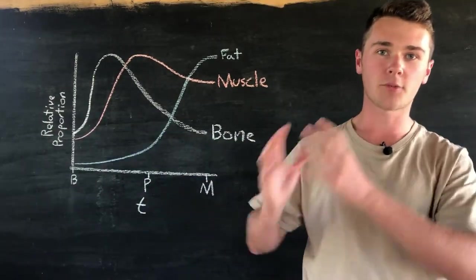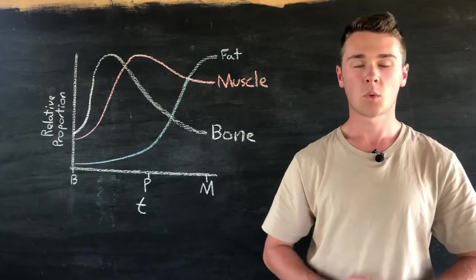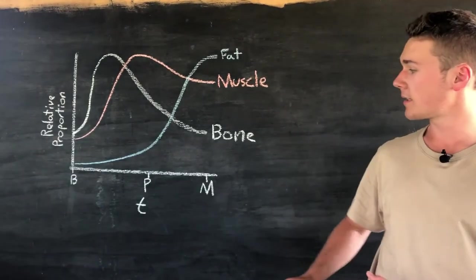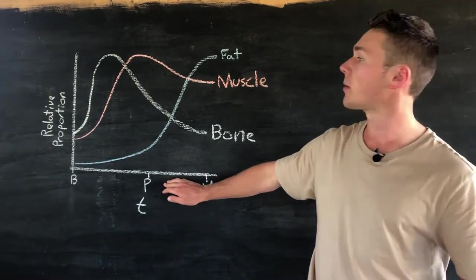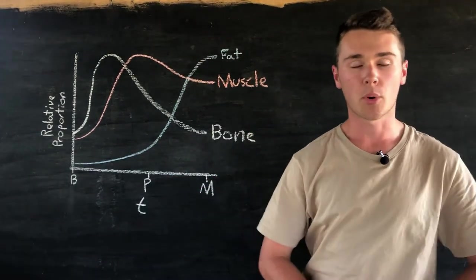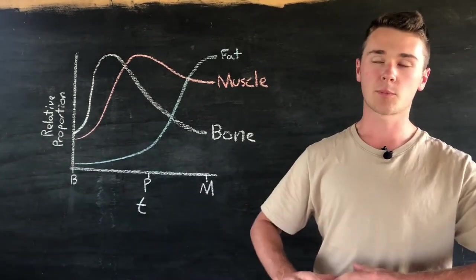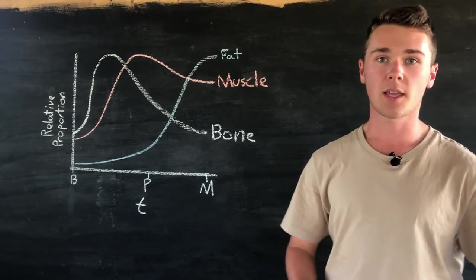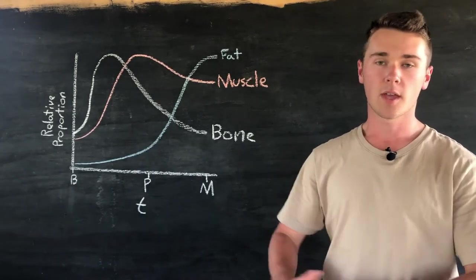So there we have it. That is the growth and development of our animals. We now know what the best time to sell our animals are, and that is pretty much a little bit after puberty. Because we get that maximum growth, the maximum amount of muscle proportionate to the rest of the body. This will allow us to use our feed most conservatively and maximize the efficiency of the food we give.